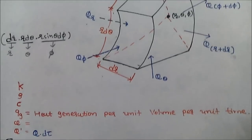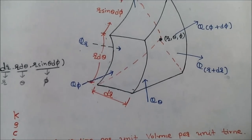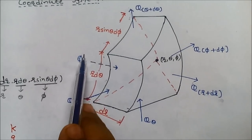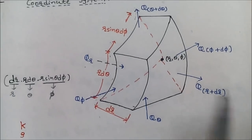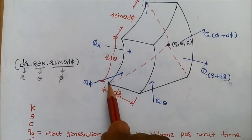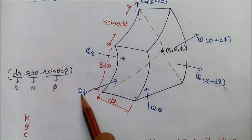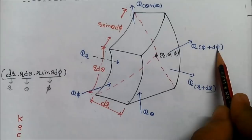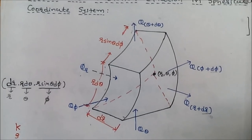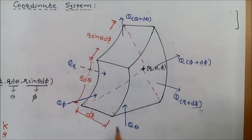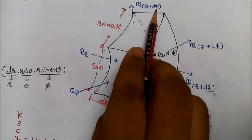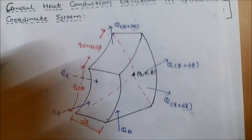We write heat supply in three directions. In the r direction, heat input equals qr and heat output equals qr+dr, meaning the change is with respect to dr. Similarly, in the φ direction, heat input equals qφ and output equals qφ+dφ. In the θ direction, heat input equals qθ and output equals qθ+dθ.